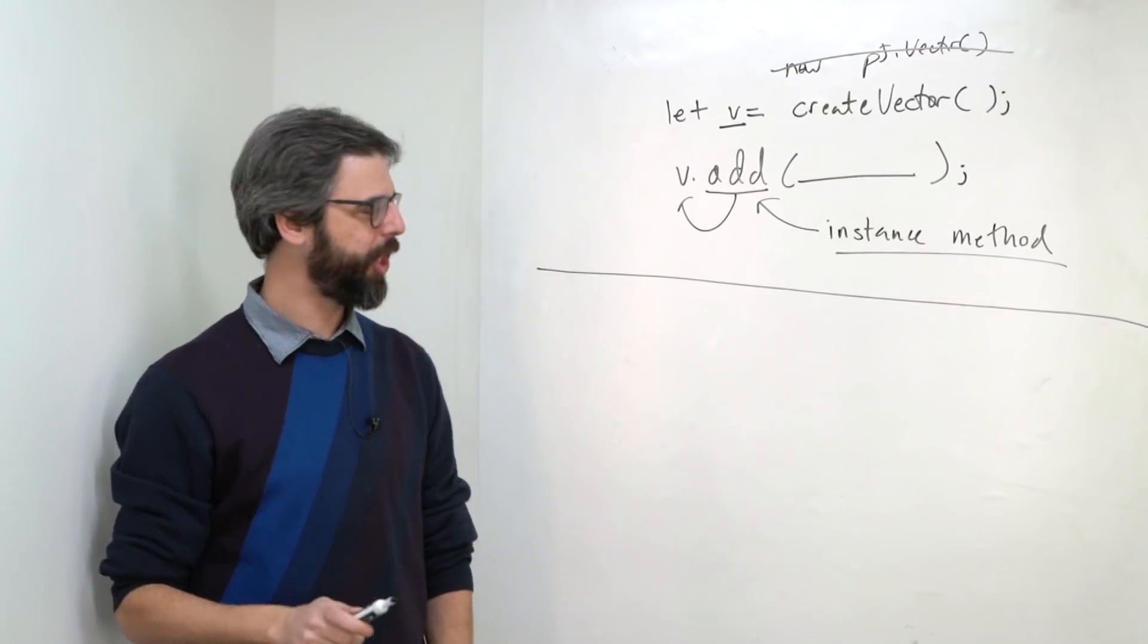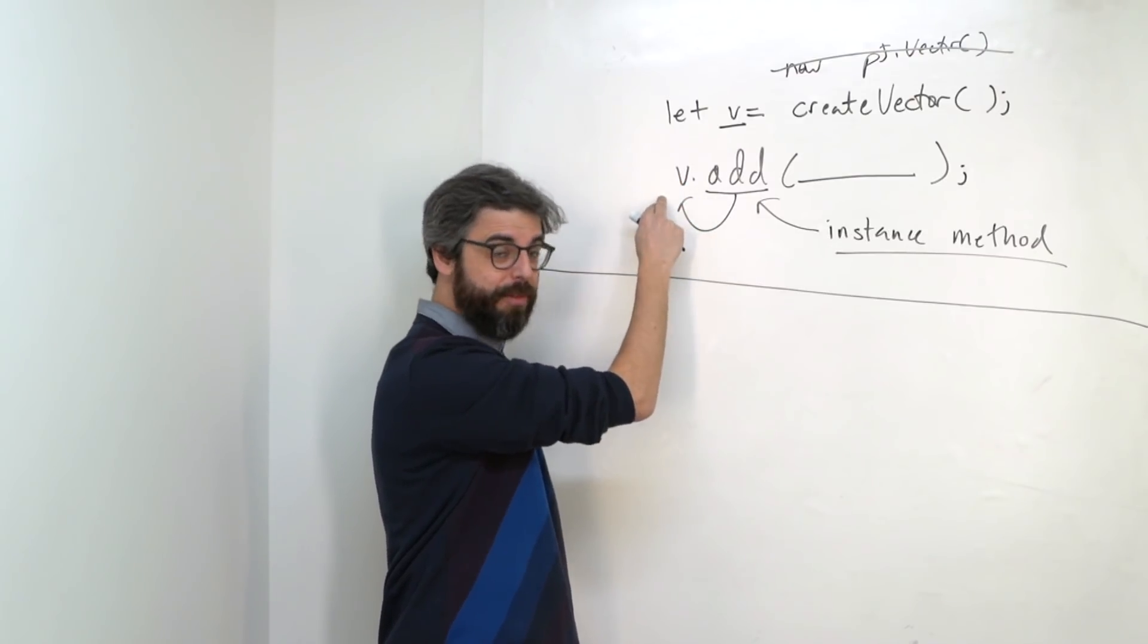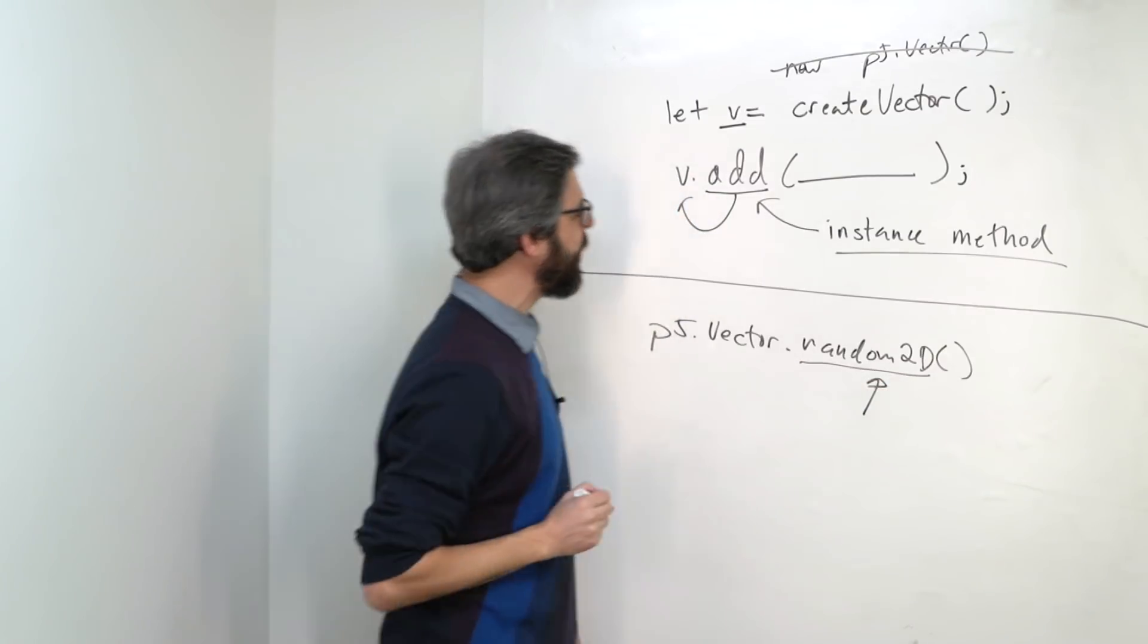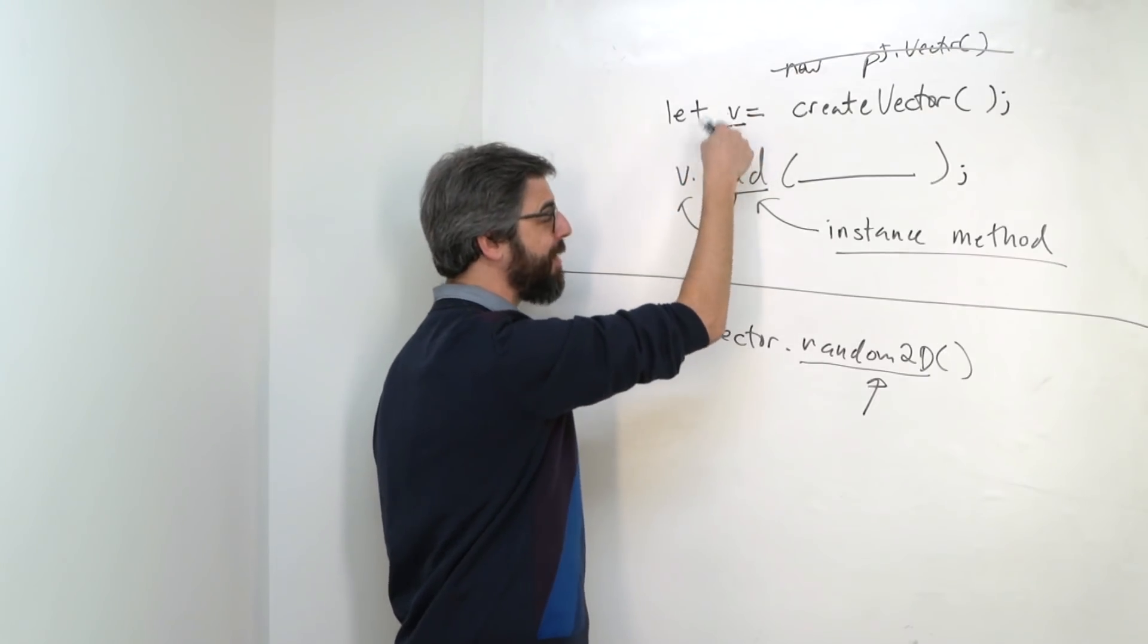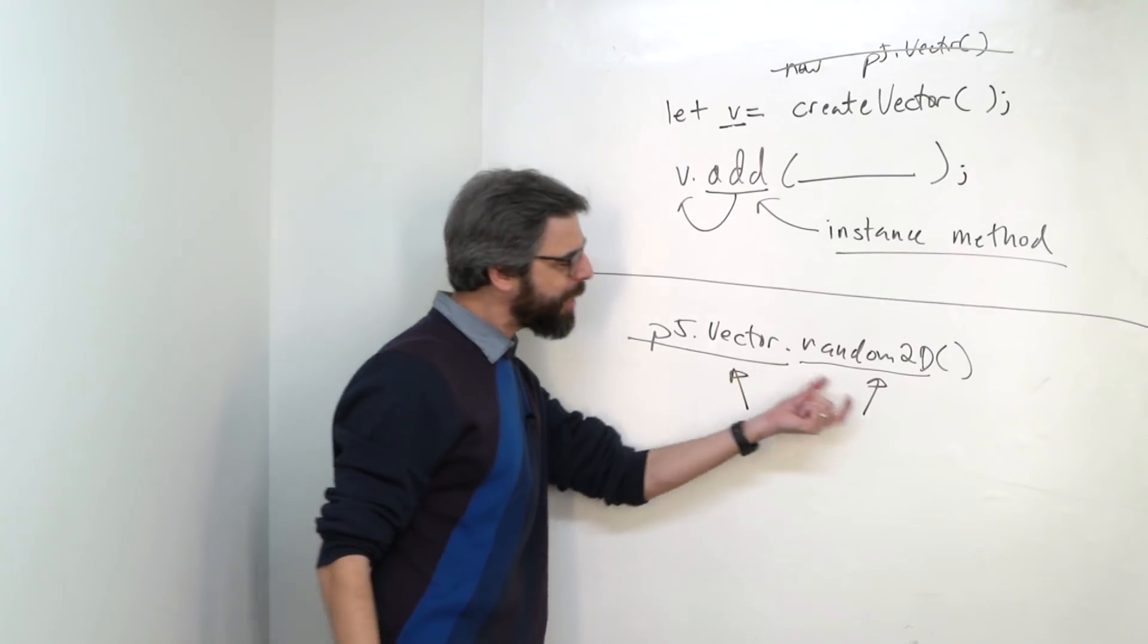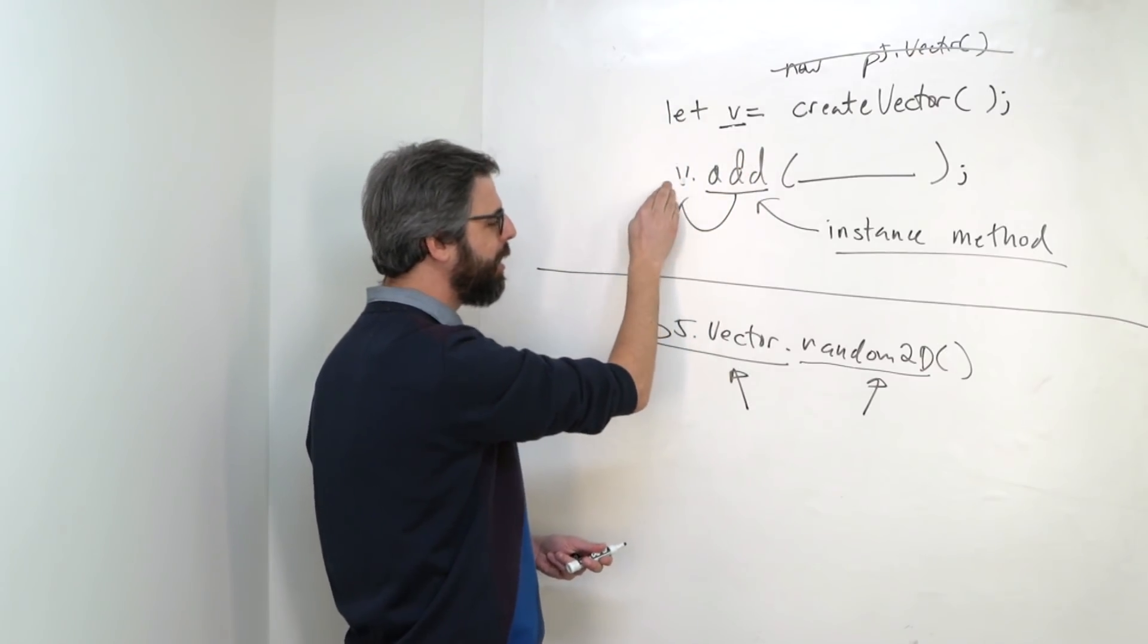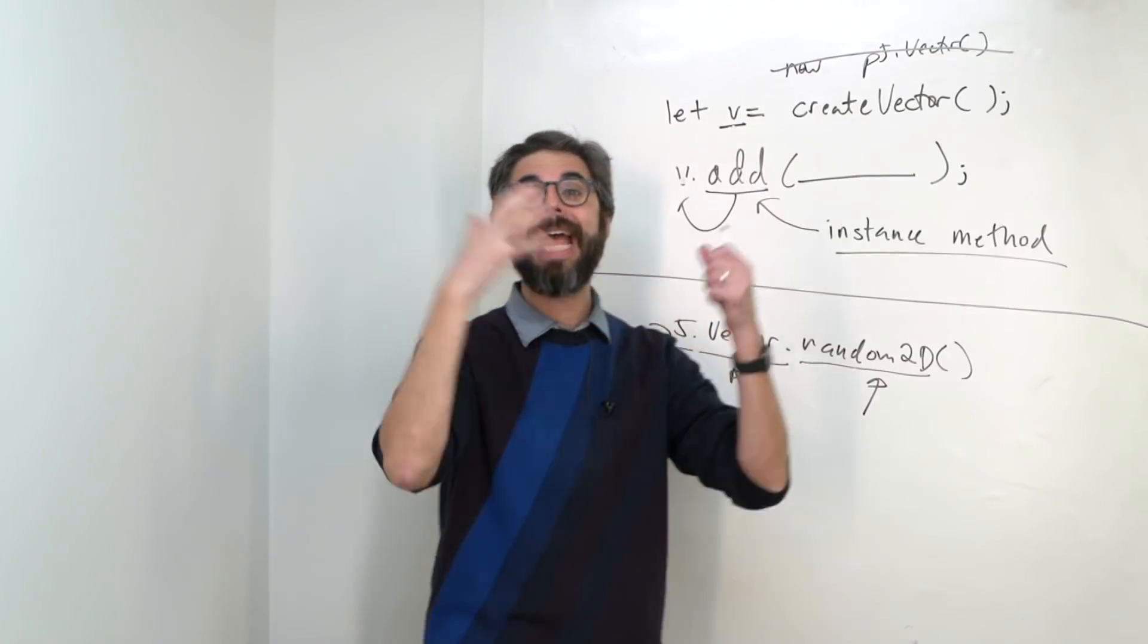A static method, a static function, is one that is not called specifically on an individual object itself, but rather on the class as a whole. So notice how I'm calling a function random2d, just like I'm calling a function add. But instead of on a specific instance of a p5 vector object, I'm calling it on the name of the class itself, p5.vector. That's because this bit of functionality isn't associated with a particular object. I want to add something to this specific vector here. But here, there's no actual specific vector I'm talking about. I just want to make a new random vector.